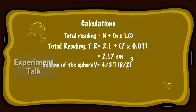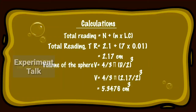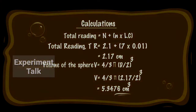Total reading TR equals 2.17 cm. Volume of the sphere V is equal to 4/3 × π × (D/2)³. V is equal to 4/3 × π × (2.17/2)³, which is equal to 5.3476 cm³.